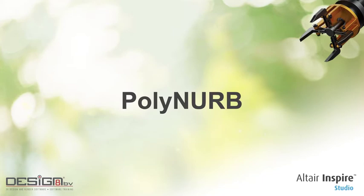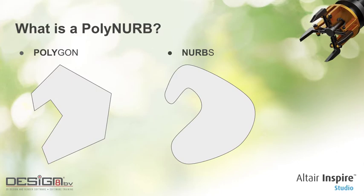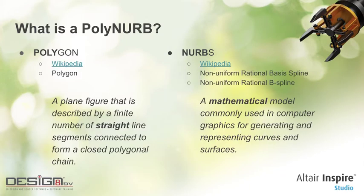PolyNURBS consists of two words: Polygon and NURBS. Both are shape representations generated by a computer. NURBS stands for non-uniform rational basis spline, or B-spline. It is a mathematical model the computer uses to generate and represent curves and surfaces using mathematical equations of a higher order, allowing you to create more complex shapes.